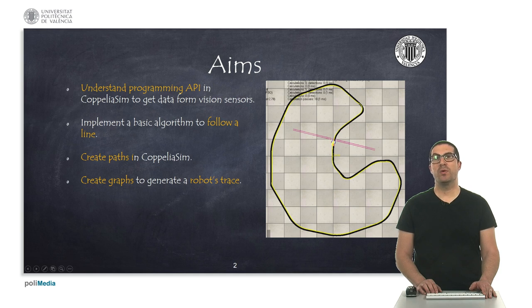The goal is to implement a basic line tracking algorithm. To do this, we need to create a path with the layout of the circuit, or the path we want to follow.